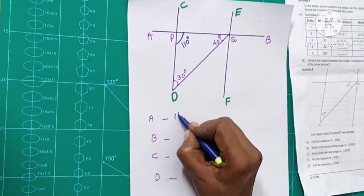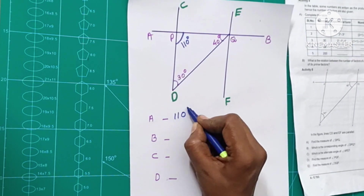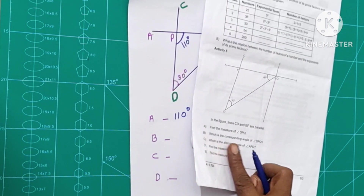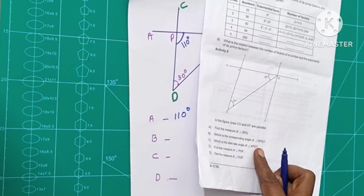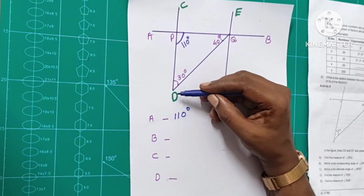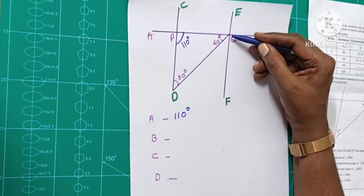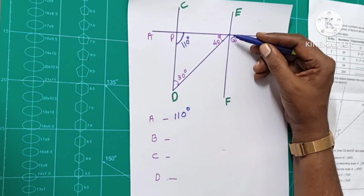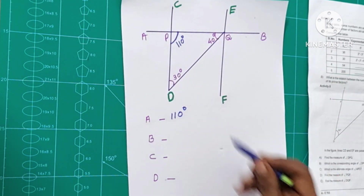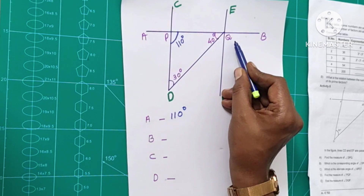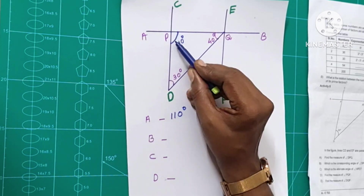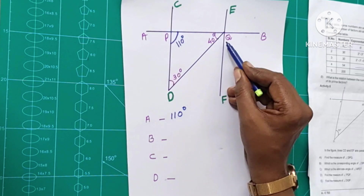Then, we have 110 degrees here. Now, which is the corresponding angle of DPQ? That is DPQ. We call it parallel lines — this is the corresponding angle of DPQ.